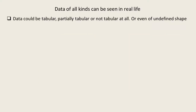We now know that relational databases keep all data in tables, which brings an interesting question: are data in real life actually tabular? The answer is variable — sometimes data you have are already tabular, as in the accounting example. Sometimes your data will be partially tabular — part of it could be represented as a table, but another part maybe not. And sometimes you have totally non-tabular structures, or even data of some kind of undefined shape with no particular structure at all.